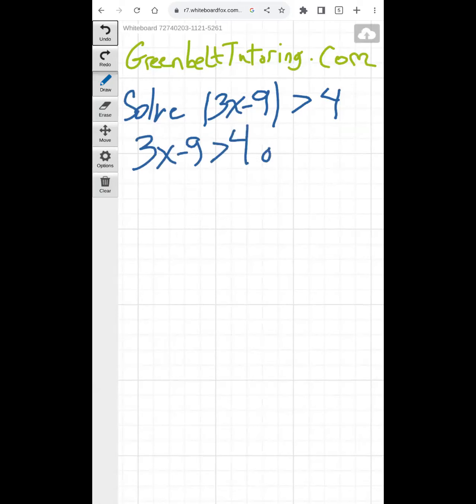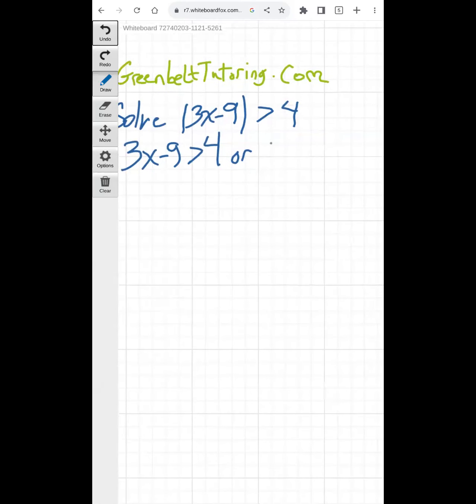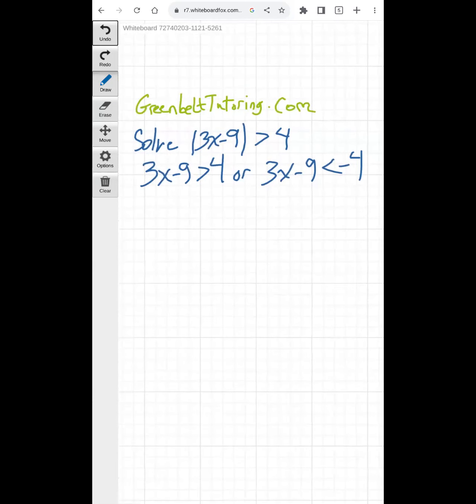There's another solution, which is you write out the inequality again, but you have to flip the sign and you have to change the other side of the equation to negative. So the absolute value of 3x minus 9 is greater than 4 is true when 3x minus 9 is greater than 4 or when 3x minus 9 is less than negative 4.